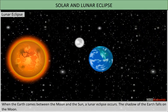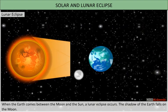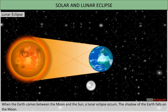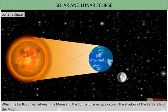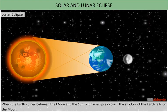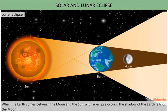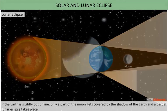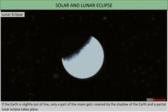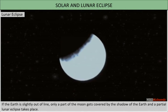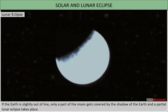Lunar eclipse. When the earth comes between the moon and the sun, a lunar eclipse occurs. The shadow of the earth falls on the moon. If the earth is slightly out of line, only a part of the moon gets covered by the shadow of the earth, and a partial lunar eclipse takes place.